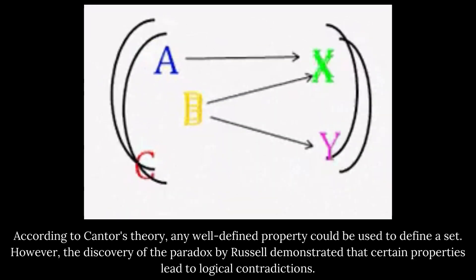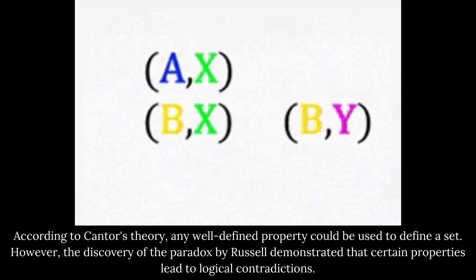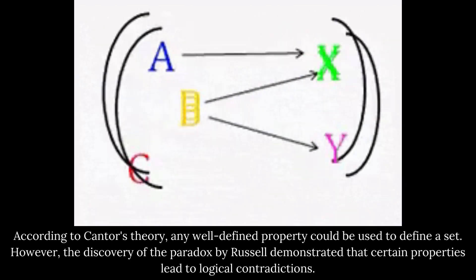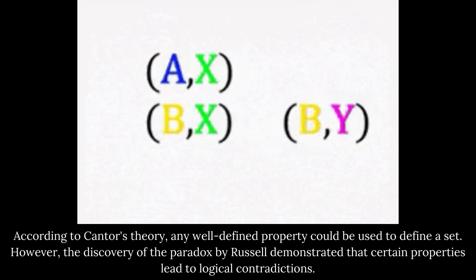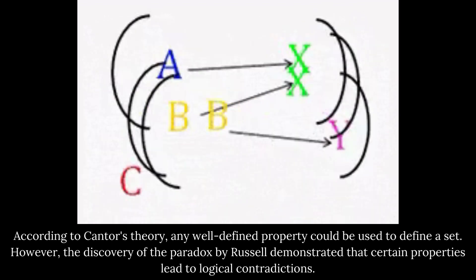According to Cantor's theory, any well-defined property could be used to define a set. However, the discovery of the paradox by Russell demonstrated that certain properties lead to logical contradictions.